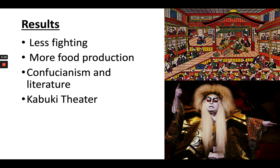So what are the results of all of this? Less fighting, because the daimyos are forced to sustain two households — one in Edo and one back home — so they can't acquire wealth or build an army like before. You also have an increase in food production and food imports, which leads to an increase in population. Part of this is because crops from the Americas start to percolate across Asia, increasing the carrying capacity of the land.